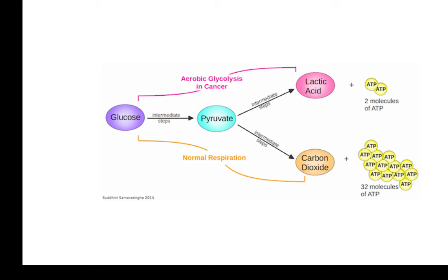So this is a very important hallmark. It allows the cell to meet the demands of quick replication. Quick replication requires building new cells — it needs lipids for the plasma membrane, proteins to make enzymes and organelles, and so on. All of these organic substances need carbon atoms, and these carbon atoms come from glucose via aerobic glycolysis.